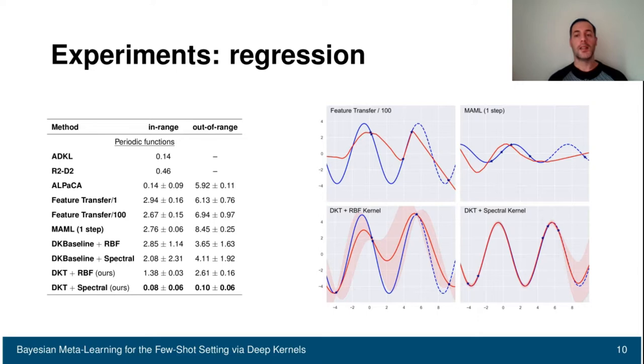Instead, for DKT, for DKT with RBF and DKT with a spectral kernel, we have a much better fit. Moreover, we also have the red shadow representing uncertainty. On the left, we can see some quantitative results. You can see that the error for DKT is the lowest one.